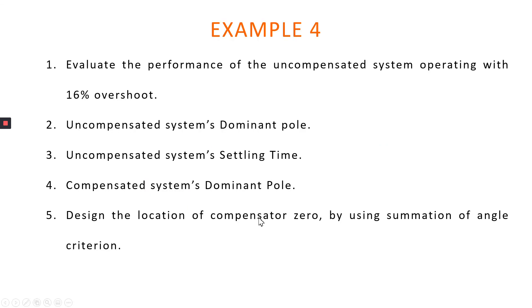So this is a summary of the steps in order to design the PD compensator. So first we evaluate the performance of the uncompensated system operating with 16% overshoot, and then we determine the uncompensated system dominant pole.